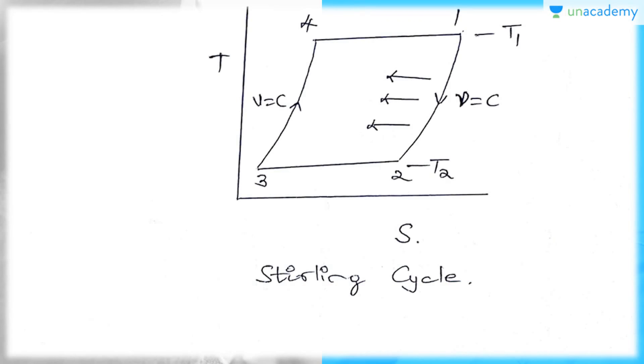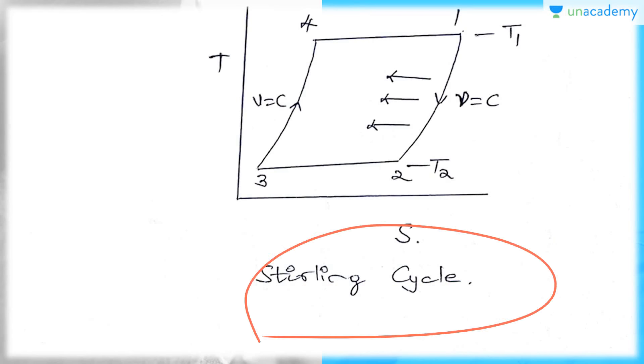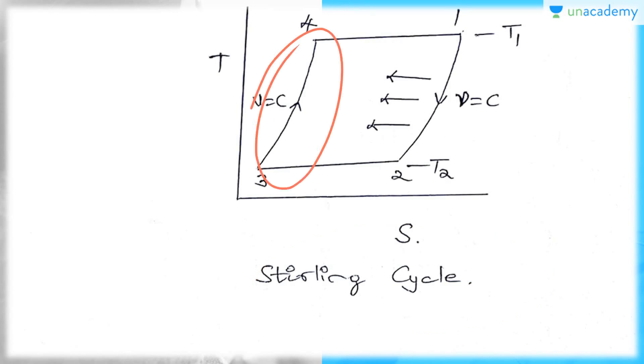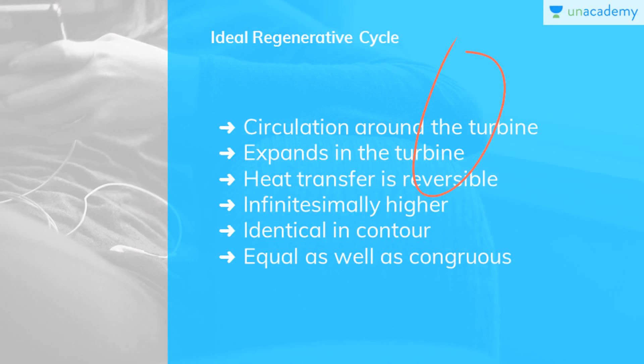The ideal sterling cycle has the same efficiency as the Carnot cycle. You can see the T-S diagram of a sterling cycle, showing processes 1, 4, 3, and the constant volume processes.